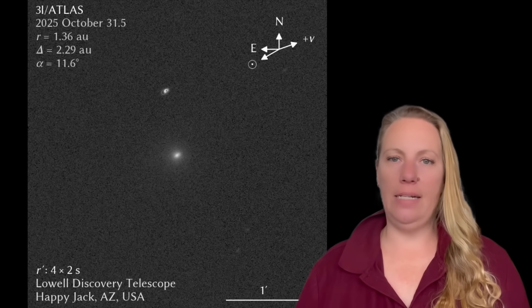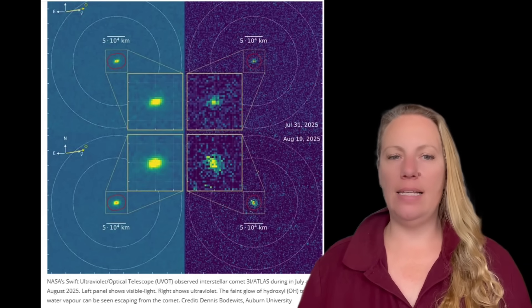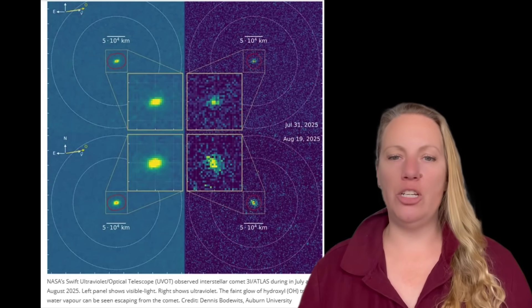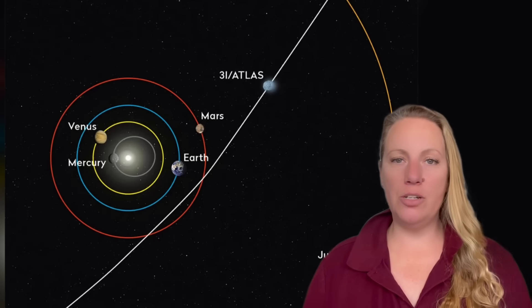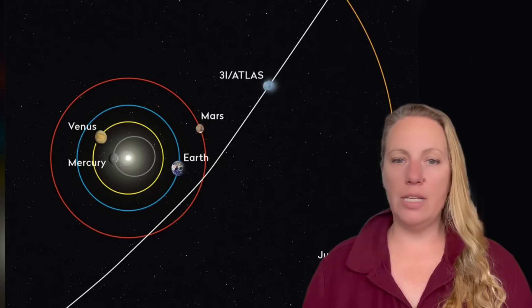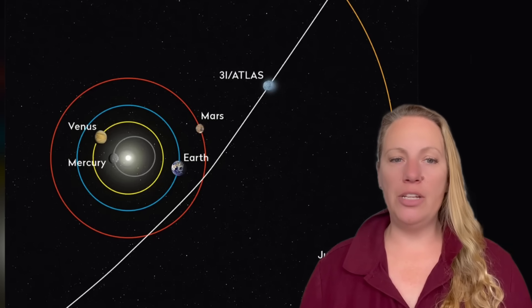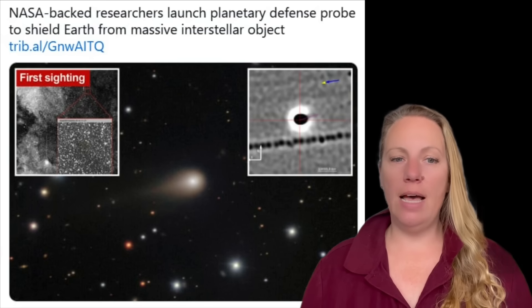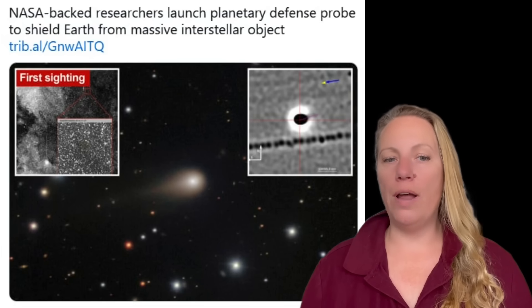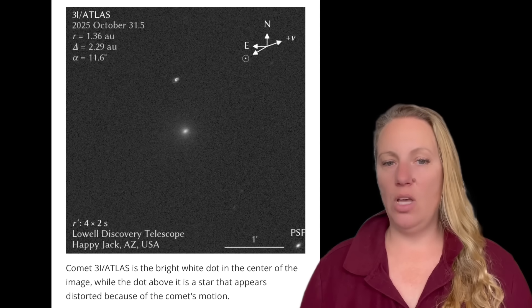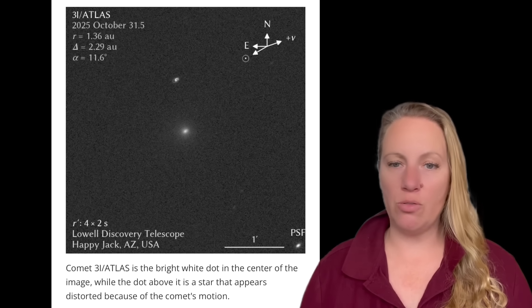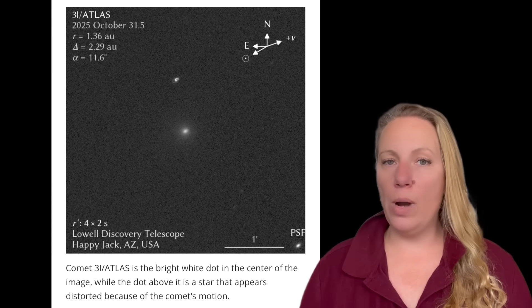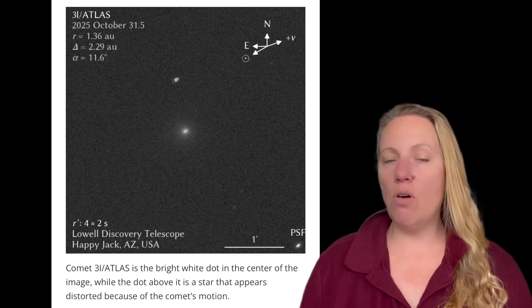Well, still, the most prevalent theory is it has a natural origin, but an anomalous composition. That's the most conservative scenario. 3i Atlas is an interstellar comet formed in another star system, ejected via gravitational interactions, and now passing through our system. Its odd behavior and composition tells us about a low metallicity or a very old system or a different formation environment. Everyone agrees this thing is very old if it's a natural comet. So this is scientifically already powerful enough. So it's natural, but it's exotic.